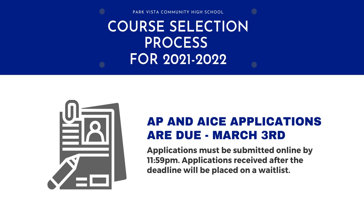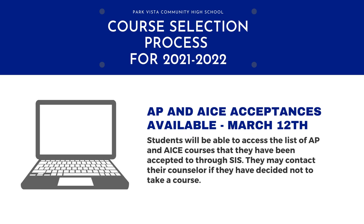Students will have from February 23rd to March 3rd to complete their AP and ACE applications. The online application will close on March 3rd at 11:59 p.m. Any applications received after the deadline will be placed on a wait list. Once the application closes, teachers will review the applications and submit their acceptance lists to the school counseling office. Those acceptances will then be entered on the student's course request screen in SIS. Beginning March 12th, students will be able to view the AP and ACE courses they were accepted to through their SIS portal. If they have questions regarding their acceptances, they can contact the teacher directly by email. If accepted to a class they no longer wish to take, they can contact their school counselor by email to have it removed.